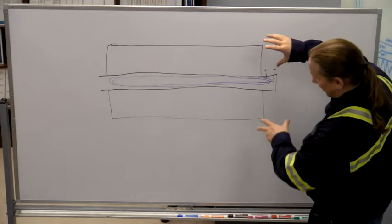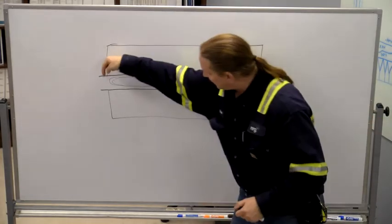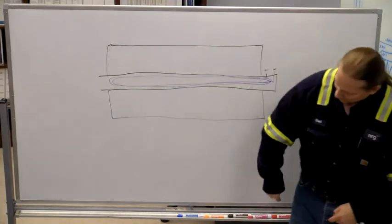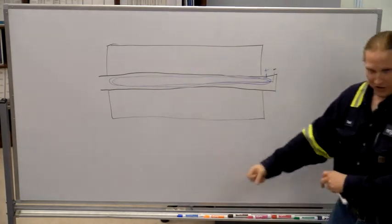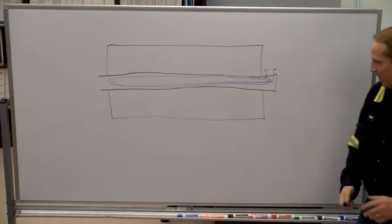The stationary stator part of the generator has conductors built into it that are going around. So this magnetic field spins, it goes perpendicular to the conductors and then they get voltage induced in them. And that's the big generator thing. There's a whole other video on that.